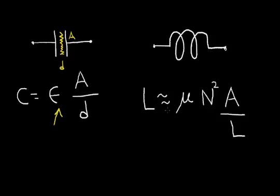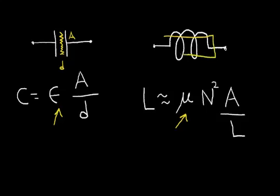A similar thing occurs in the inductor. Instead of epsilon, there is this quantity mu — it uses the Greek letter mu. This is called permeability. It is a property of the material inside of the coil.